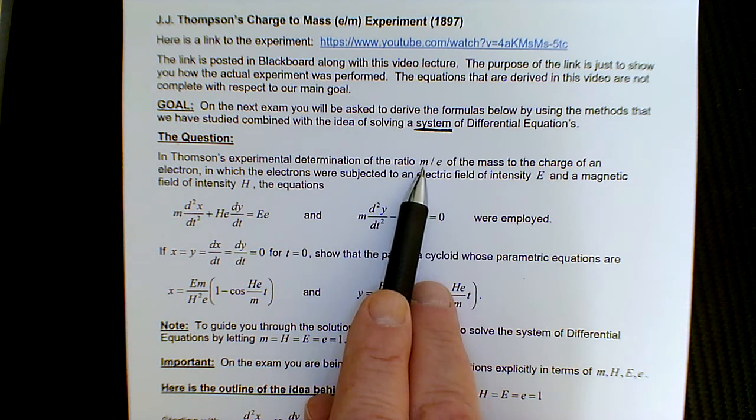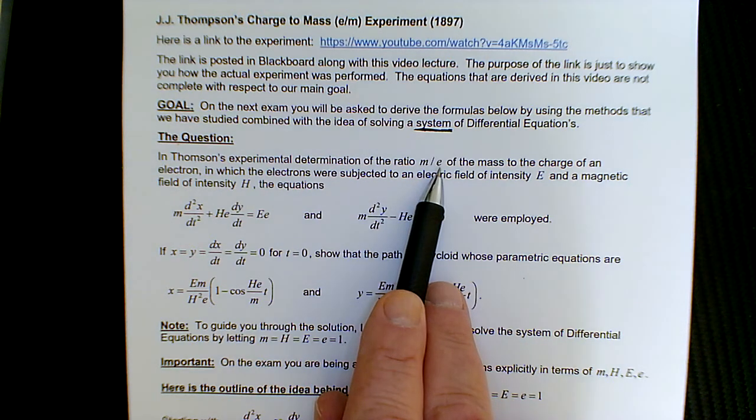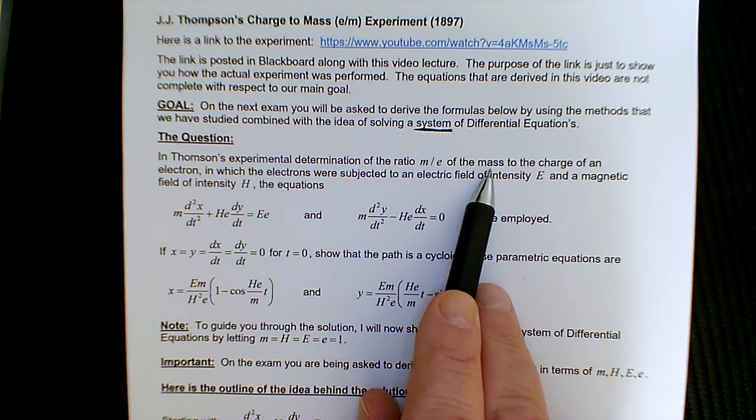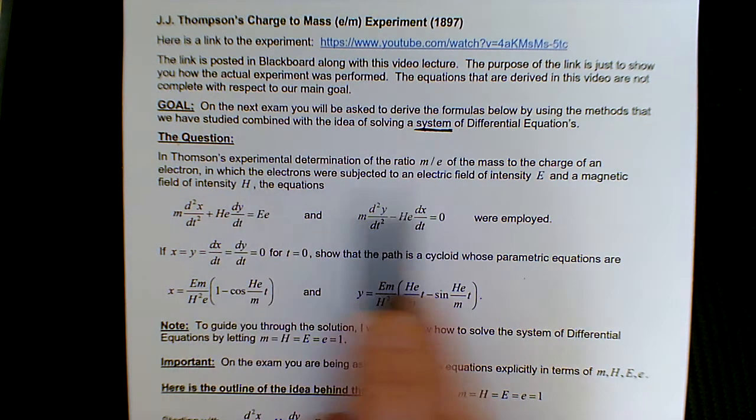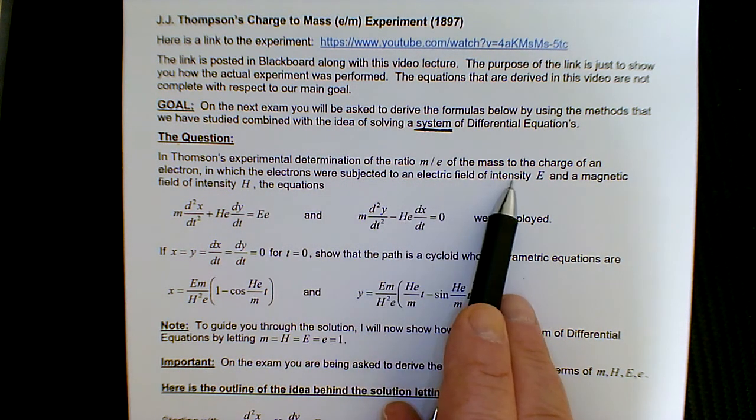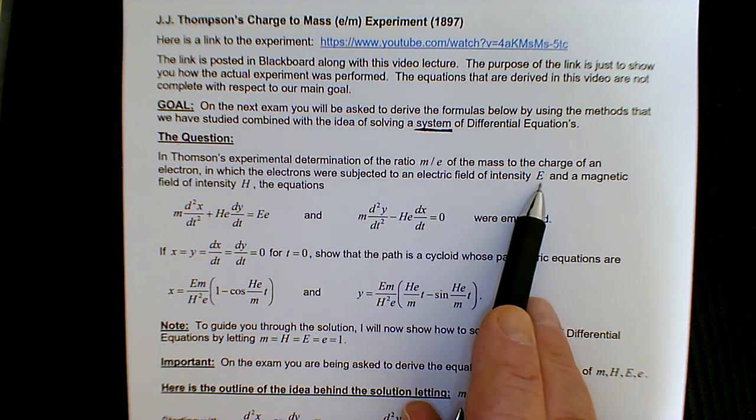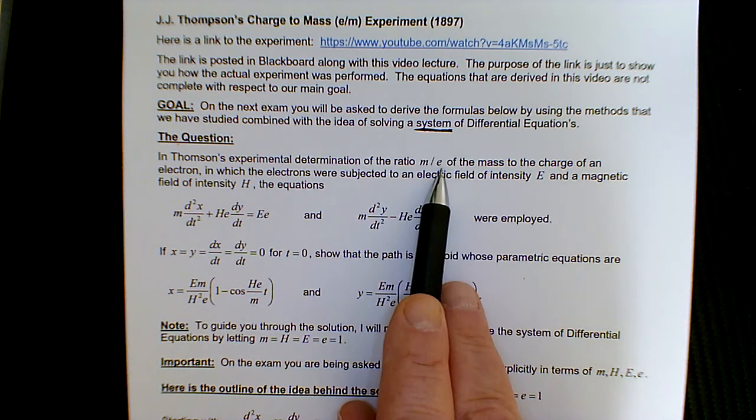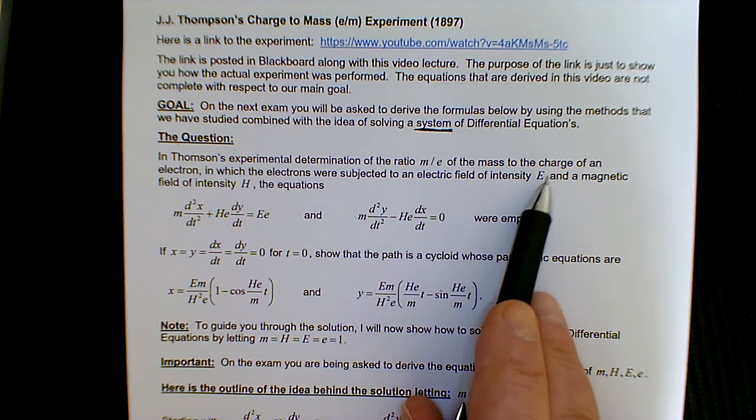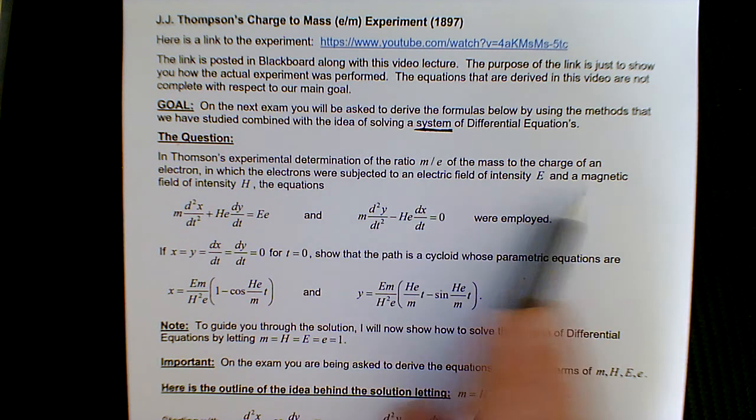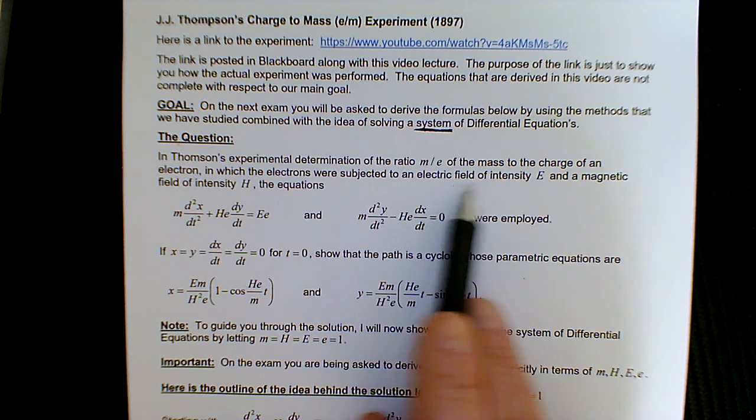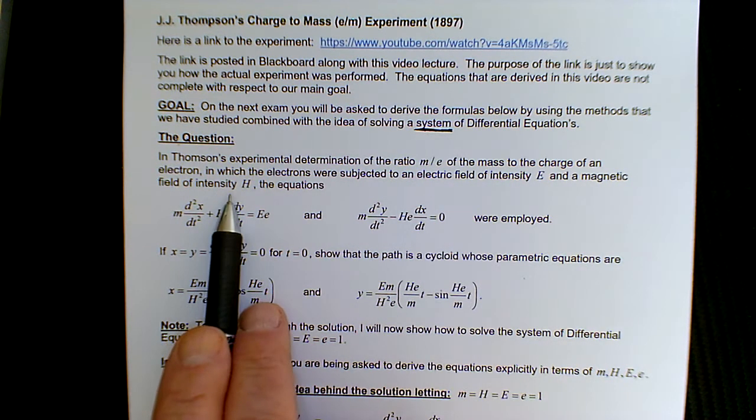And lowercase m is the mass of the electron. Lowercase e is the charge on the electron. So that's the mass to the charge. And they're exposed to an electric field intensity that we use uppercase E for. And then a magnetic field intensity of H.